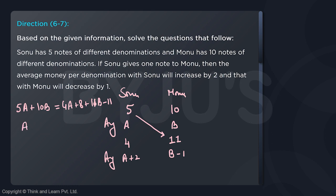From here I am getting that B minus A equals 3. So B minus A is equal to 3. This is all the information that we have with us.